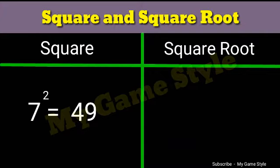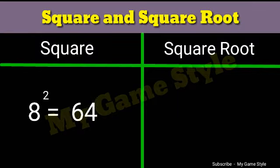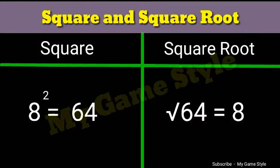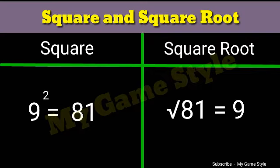7 square is equals to 49. Square root 49 is equals to 7. 8 square is equals to 64. Square root 64 is equals to 8. 9 square is equals to 81. Square root 81 is equals to 9.